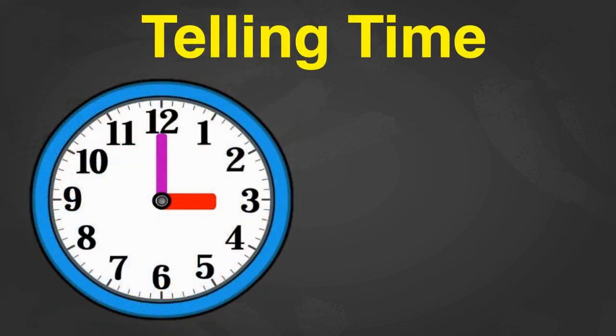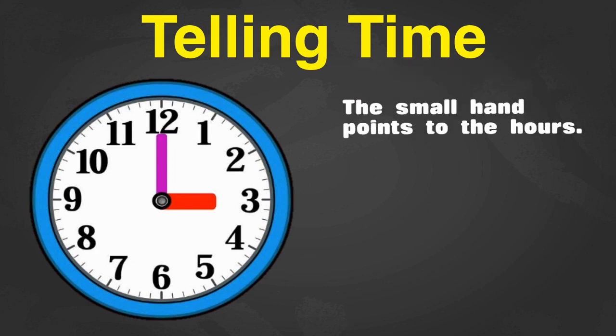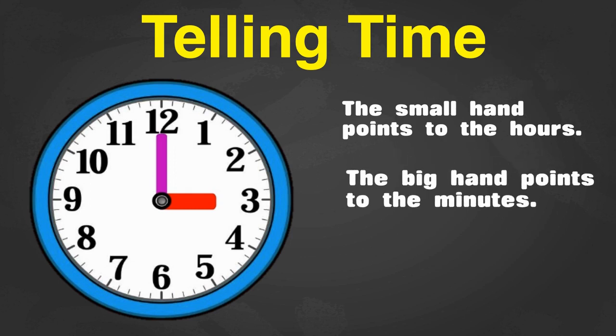But what is telling time all about? Well, when we look at the clock, we have a small hand or short hand and a big hand or long hand. The small hand points to the hours on the clock. The long hand or the big hand points to the minutes on our clock.